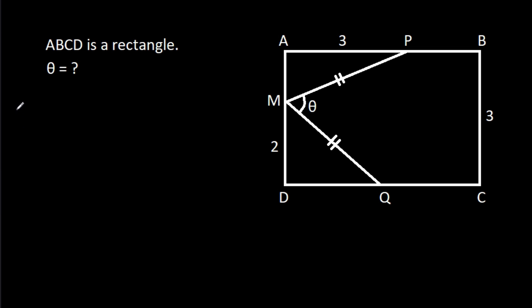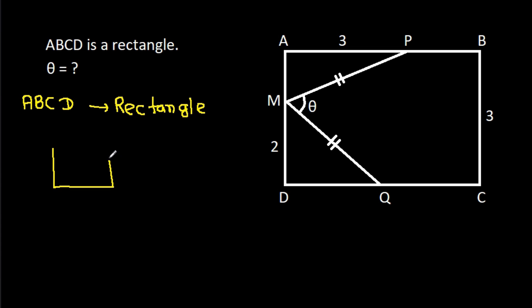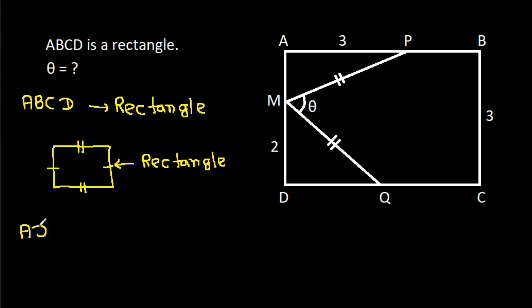ABCD is a rectangle, and in any rectangle, opposite sides are equal. So here, AD will be equal to BC, and AD will be equal to BC which is 3. So we get AD is 3.